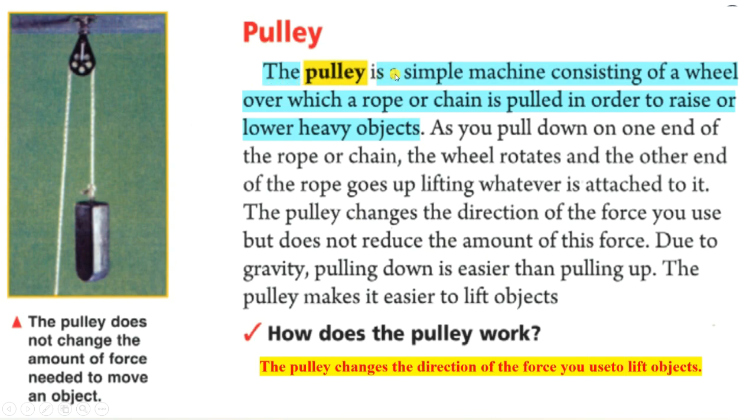Pulley. The pulley is a simple machine consisting of a wheel over which a rope or chain is pulled in order to raise or lower heavy objects. As you pull down on one end of the rope or chain, the wheel rotates and the other end of the rope goes up lifting whatever is attached to it. Due to gravity, pulling down is easier than pulling up. The pulley makes it easier to lift objects.